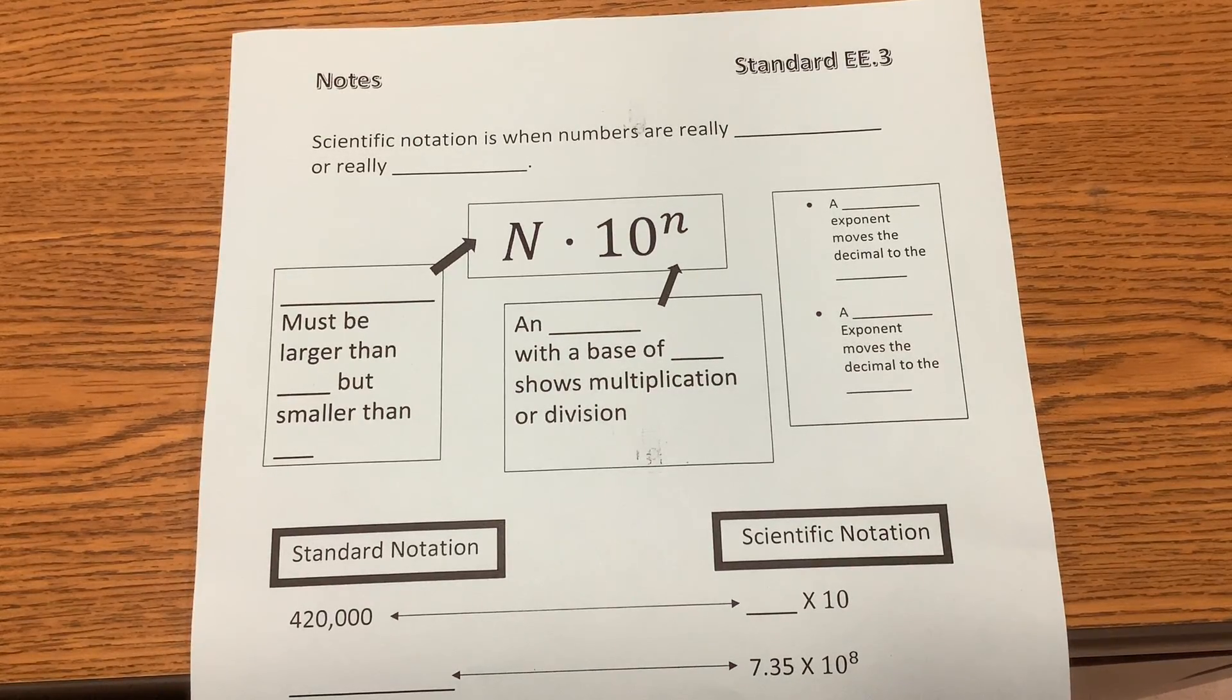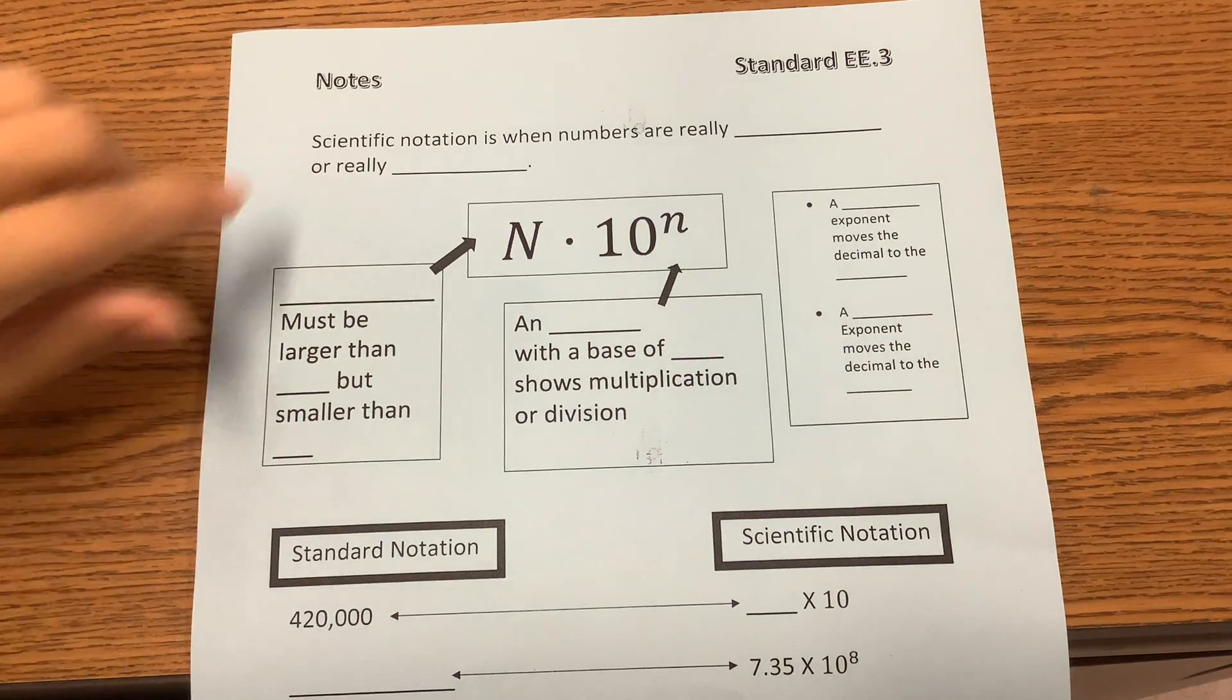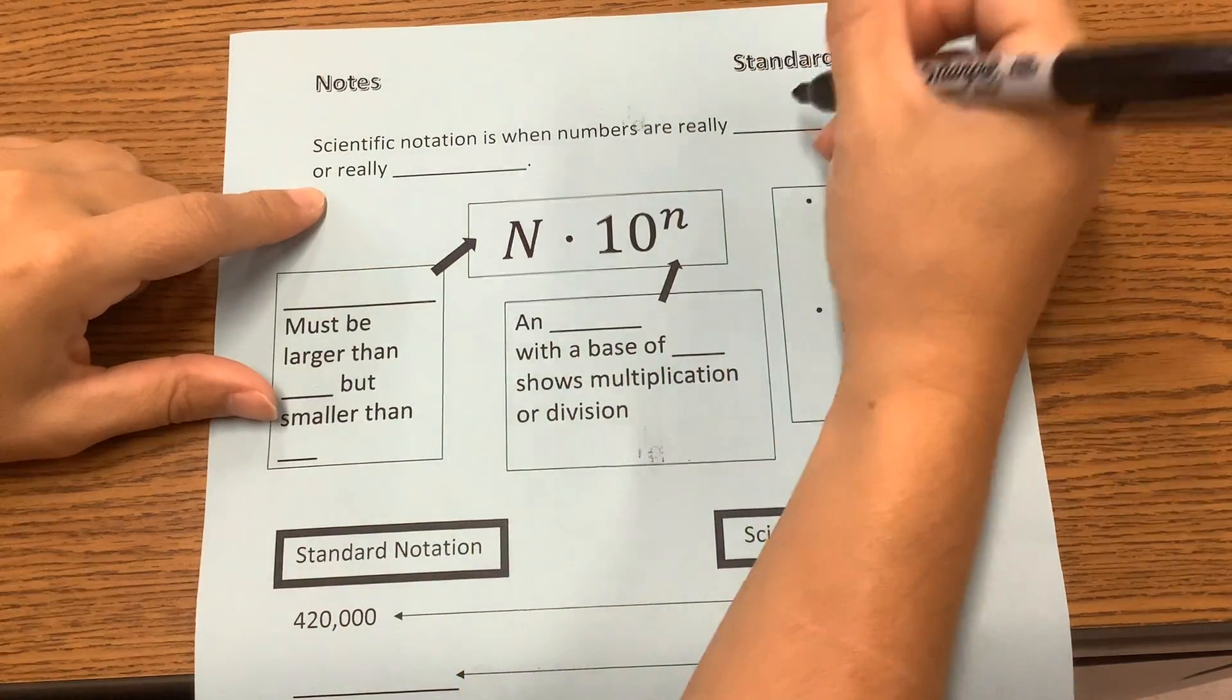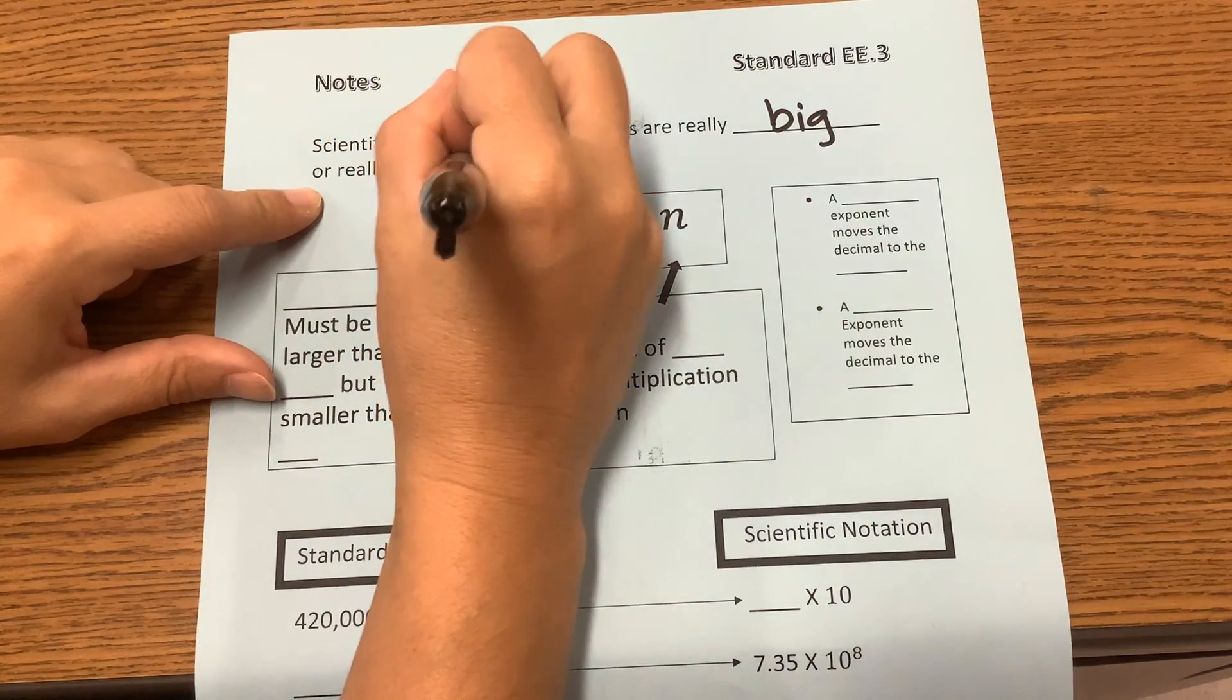Okay, so for this standard, it starts out with scientific notation. Scientific notation is when numbers are really big or really small.